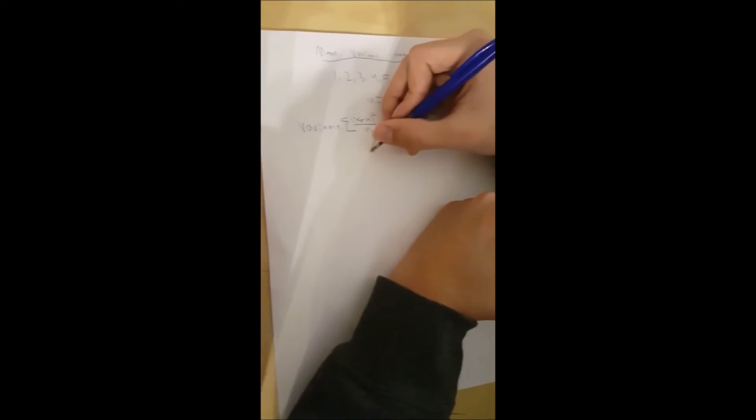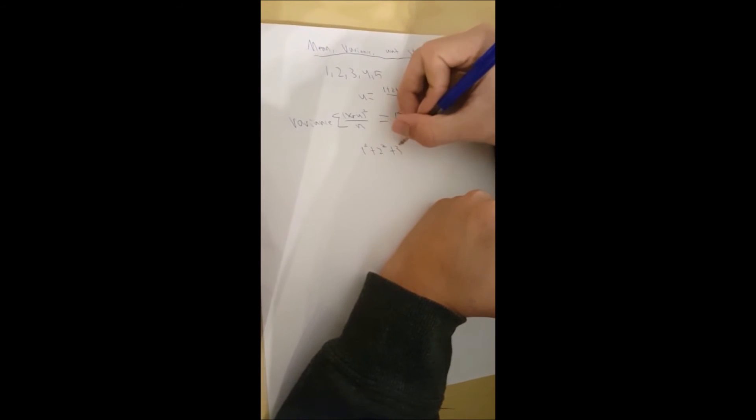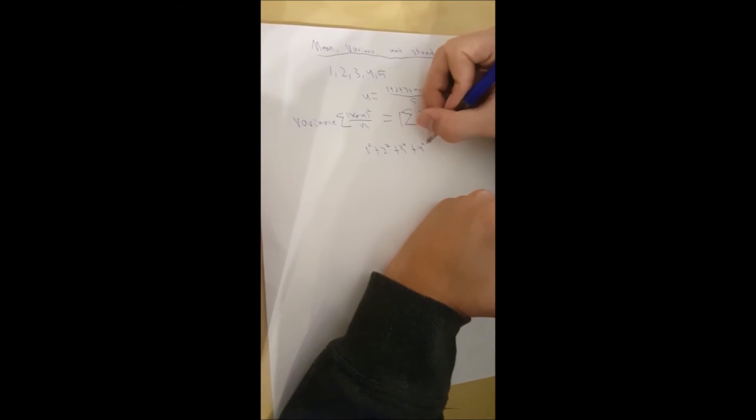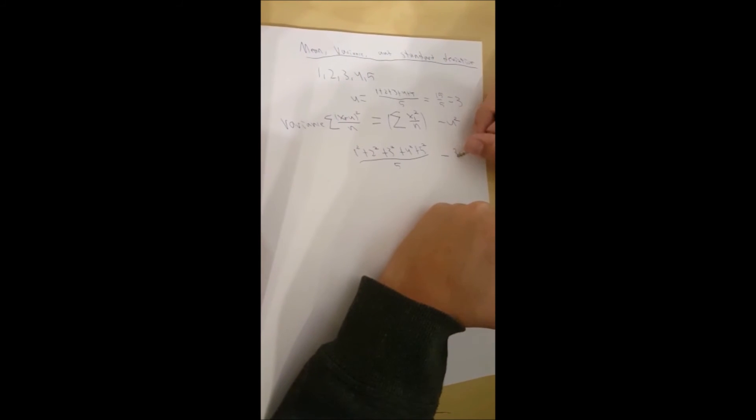So now we're going to try to find the variance of this thing. By following this, you do 1 squared plus 2 squared plus 3 squared plus 4 squared plus 5 squared over 5, minus the mean squared, which is 3 squared.